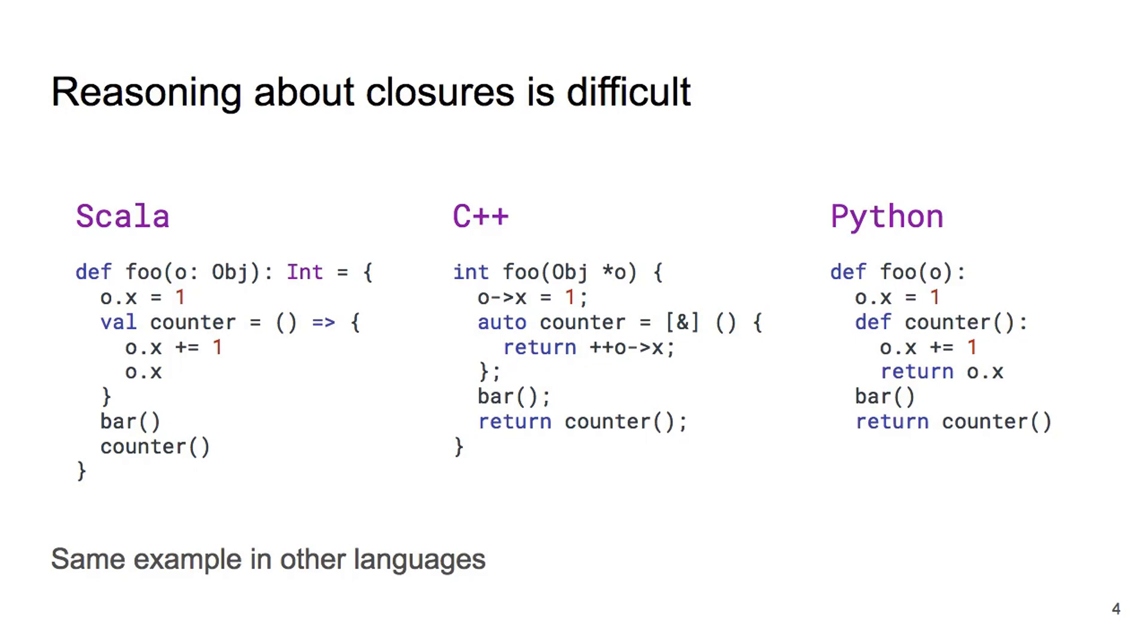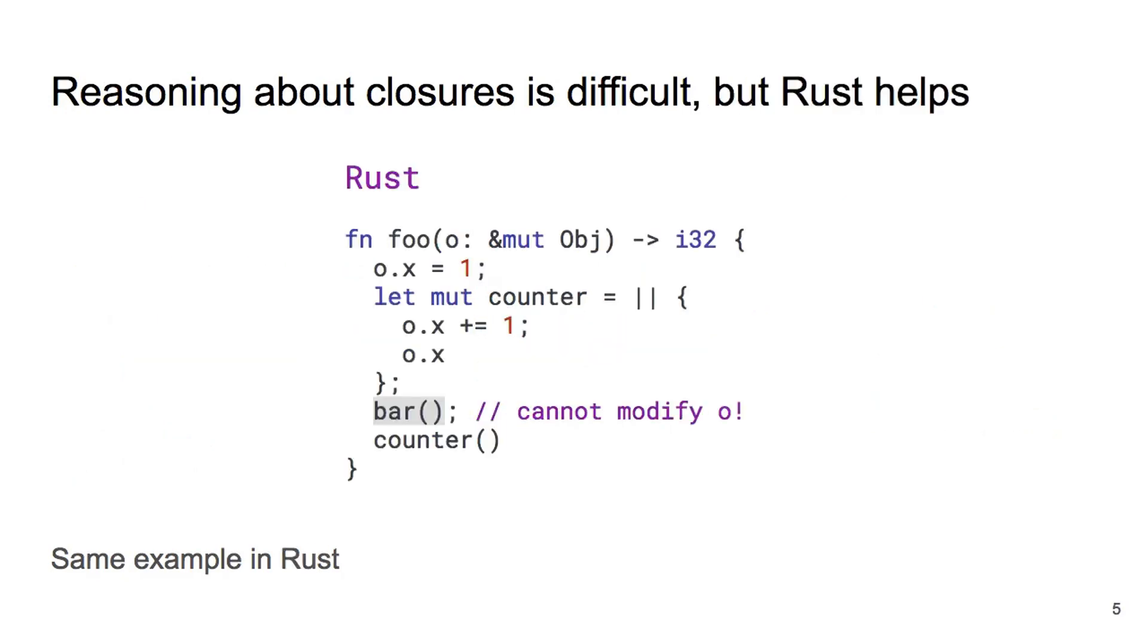Now let's look at the same example translated to Rust. The syntax is a little bit different, but we are doing the same as before. Our foo function accepts o as its argument, sets its field x to 1, then creates a closure counter that increases the field and returns the new value.